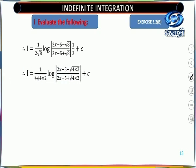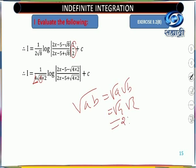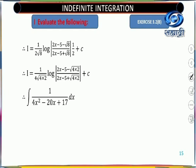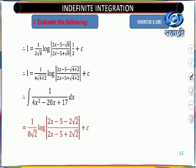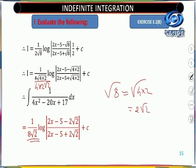Simplifying: 1/(2·√8) · 1/2 = 1/(4√8). We write √8 = √(4·2) = 2√2, so the answer becomes 1/(4·2√2) · log|(2x−5−2√2)/(2x−5+2√2)| + C = 1/(8√2) · log|(2x−5−2√2)/(2x−5+2√2)| + C.